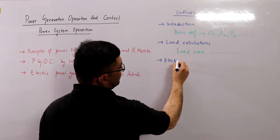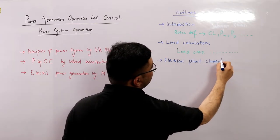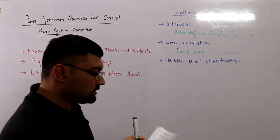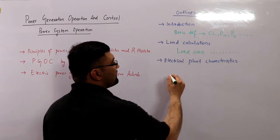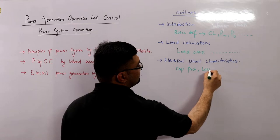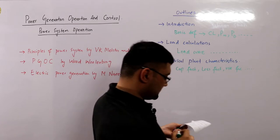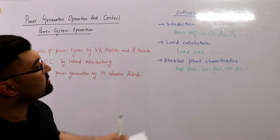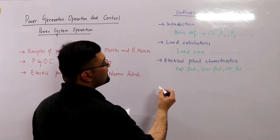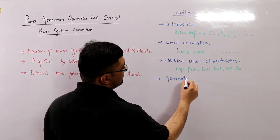We then cover electrical plant characteristics, discussing the characteristics of power generation stations including the plant capacity factor, loss factor, use factor, and utilization factor. After that we cover generation scheduling as a separate heading.